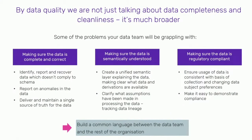The problems are broader than just completeness and cleanliness. Making sure data is complete and correct is critical — data that isn't destroys confidence faster than anything else. A set of reports where the numbers don't match up just destroys confidence. You need to identify, report, and recover data that doesn't comply to schema, report on anomalies, and establish a single source of truth so everyone is working off the same data, not siloed data pods.